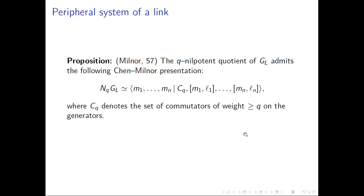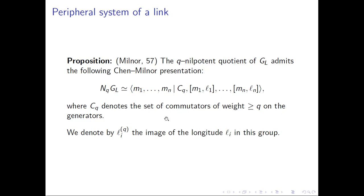Meridians and longitudes can be seen as elements of the group G_L. In the usual Wirtinger representation, each meridian is one of the generators associated to the arc on the diagram, and each longitude is the product of the conjugating elements in the Wirtinger relation associated to the under-crossings on the component. If we take the q-nilpotent quotient of G_L, we obtain a chain linear representation with one generator per component — the chosen meridians — with relations given by iterated commutators of weight q or higher, and the commutation of each meridian with its longitude. We denote by L_i(q) the image of the longitude L_i in this group and call them q-longitudes. Since the meridians generate the q-nilpotent quotient, the q-longitudes can be expressed as words on the meridians.